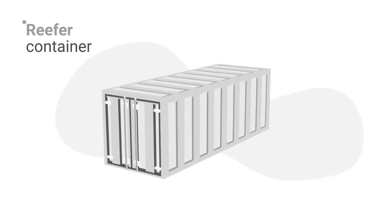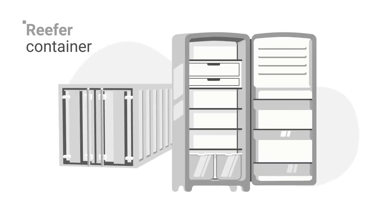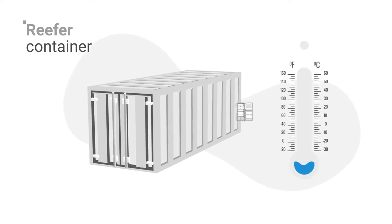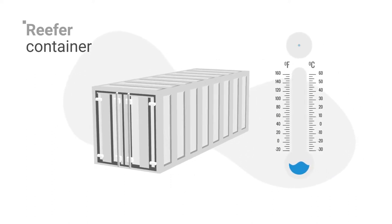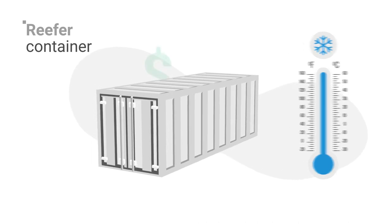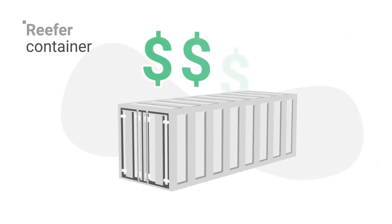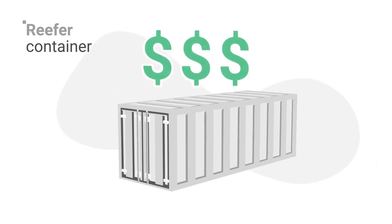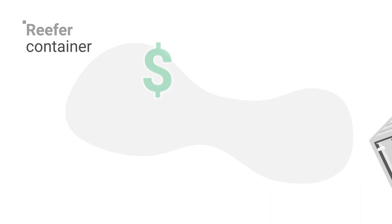2. Reefer Container. Reefer containers are basically big refrigerators that allow you to control the inside temperature of the container. They have T-shaped decking in the flooring that sends chilled air into the container, and can maintain any temperature between negative 30 and 30 degrees Celsius. But reefers can be expensive, because they need power and regular maintenance.